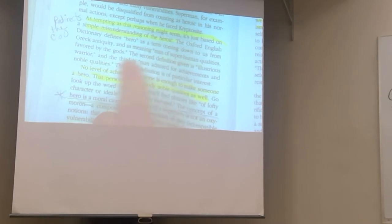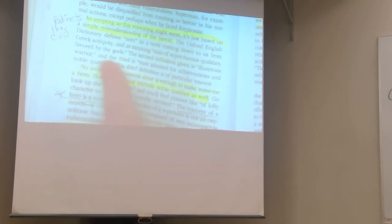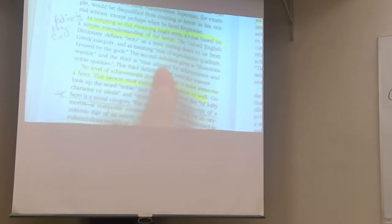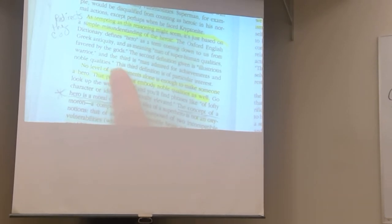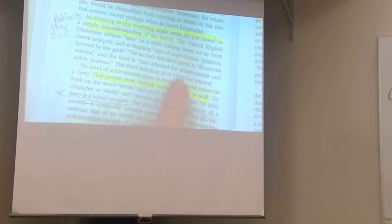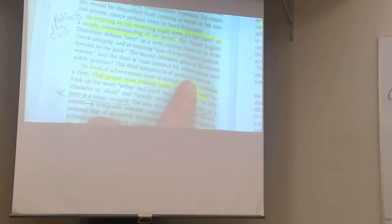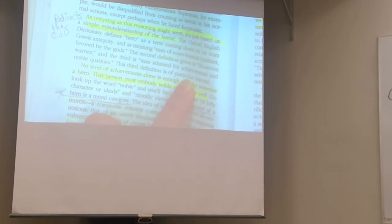Man of superhuman qualities favored by the gods. Second definition, illustrious warrior. And the third definition, man admired for achievements and noble qualities. He's intelligent. This third definition is of a particular interest. So he just narrowed his argument. He's only going to focus on the third one.